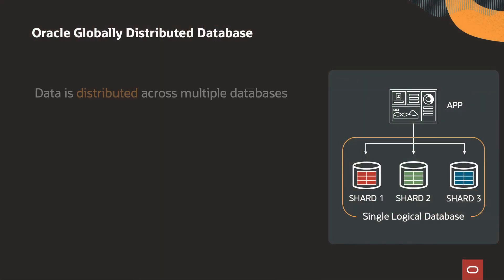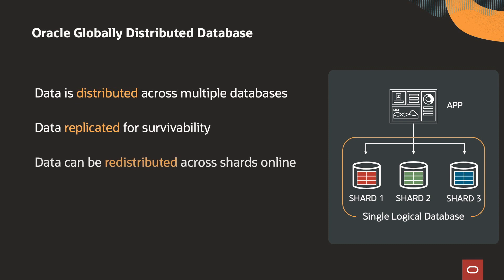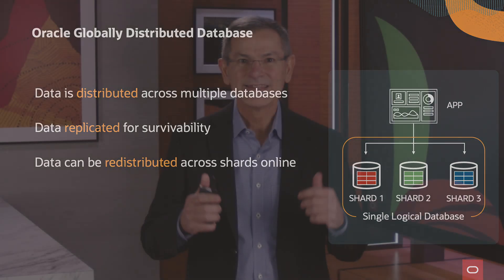An Oracle Globally Distributed Database is a single logical database. Data is physically distributed across multiple databases, which are called shards. Data in each shard is replicated for survivability. All the shards can process application requests, making it an active-active architecture. And data can be redistributed across shards, data centers, and regions while the database is running. The distribution of data is hidden from applications.